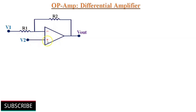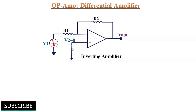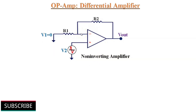We will also observe how this configuration acts as a Differential Amplifier. The Differential Amplifier shown in this circuit is a combination of both inverting and non-inverting amplifiers. If the non-inverting terminal is connected to ground, this circuit operates as an inverting amplifier. Similarly, if the inverting input is connected to ground, this circuit operates as a non-inverting amplifier.